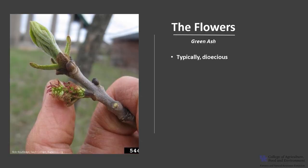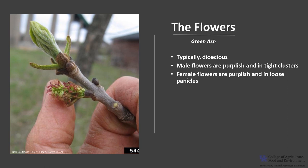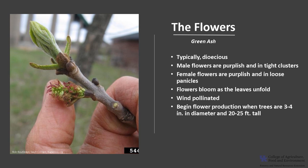This species is typically dioecious, with male flowers and female flowers on separate trees. The male flowers are in tight clusters and the female flowers are in loose panicles, and both tend to be a light purple in color. The flowers bloom as the leaves unfold in spring and are wind pollinated. Trees usually begin flower production when they reach three to four inches in diameter, up to about 20 to 25 feet tall.